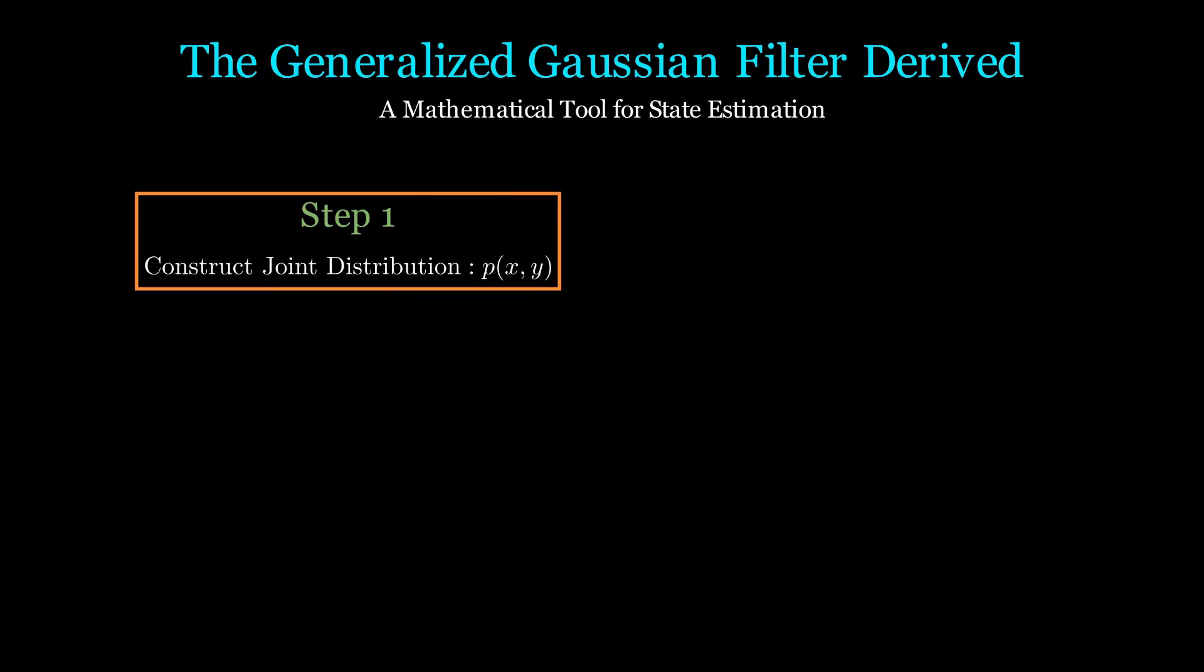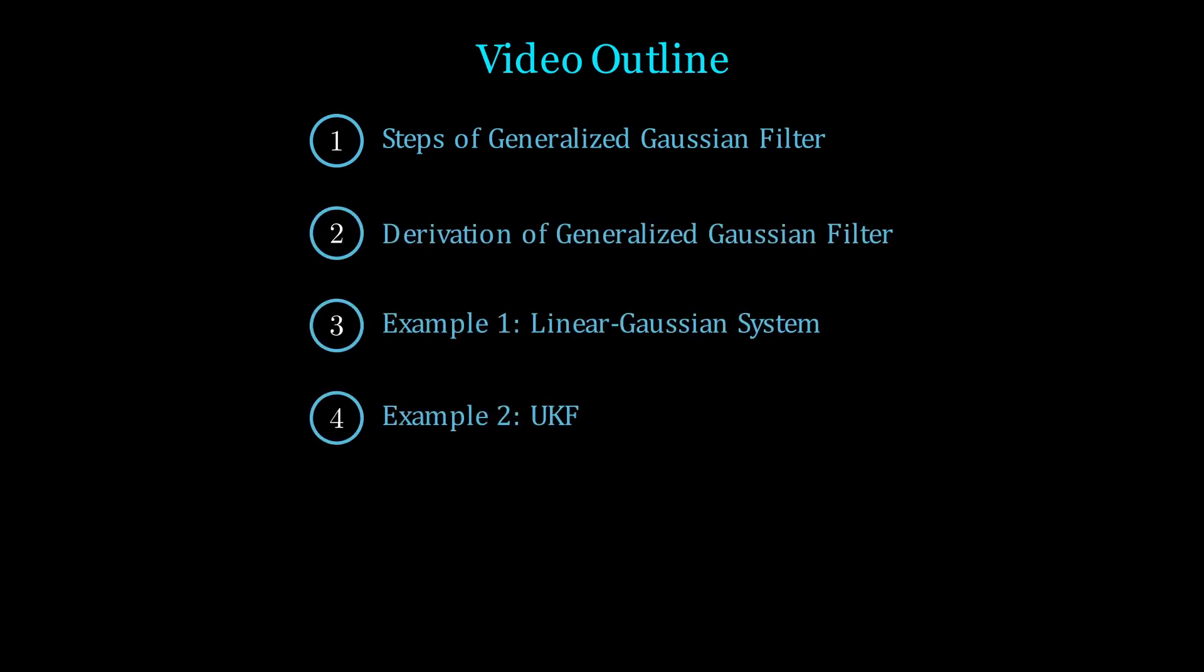The generalized Gaussian filter is not actually a filter, but rather it is a tool that is used to derive other Gaussian filters, such as the EKF or UKF. We will first overview the steps before deriving the formulas, then we'll work through two prominent examples together.